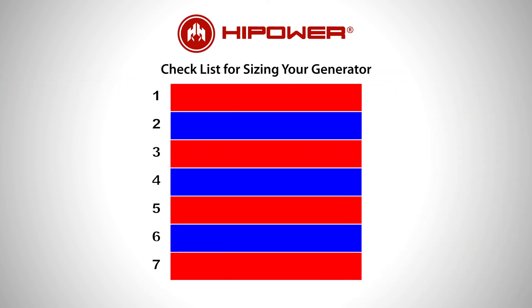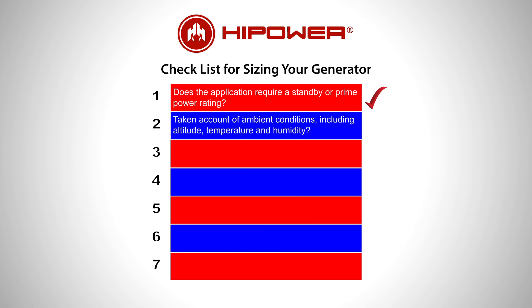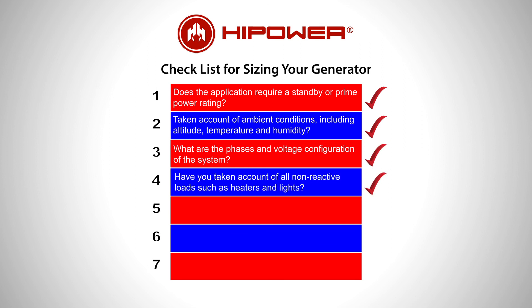To summarize, there are several factors to consider when sizing your generator: Does the application require a standby or prime power rating? Have you taken account of ambient conditions including altitude, temperature, and humidity? Have you used the manufacturer's derating formula? What are the phases and voltage configuration of the system? Have you taken account of all non-reactive loads such as heaters and lights? Small appliances can be included as they only have relatively small motors.